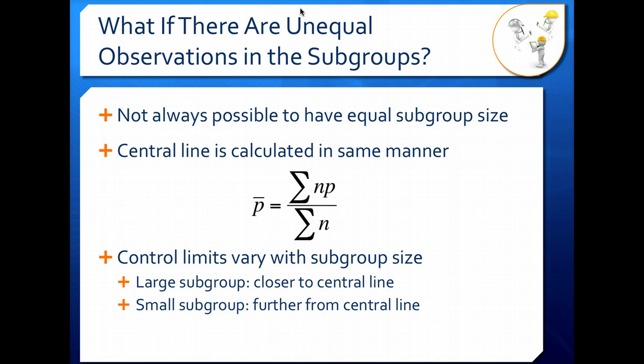Your control limits, on the other hand, your action and warning limits are going to vary as your subgroup size varies. So if you have a large subgroup, your control limits are going to move closer to your central line. If your subgroup is smaller, they move further away from your central line.